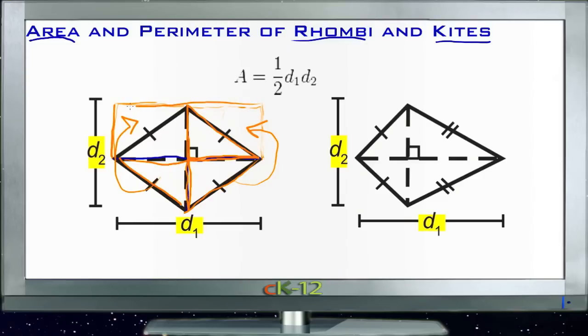Now the long narrow rectangle is going to be the same length as the original rhombus was, from here to here, which is labeled d1 in our diagram, but it's only going to be half of the height of the original rhombus, which was from here to here, and is labeled d2 in this diagram.